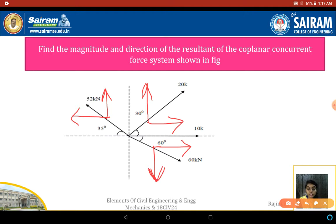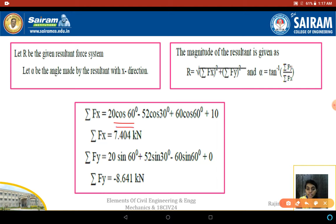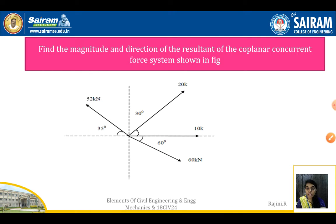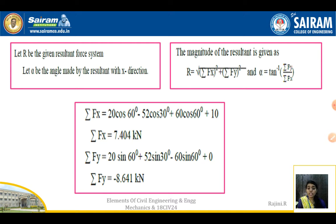For the angle: if the force is acting along the angle, we take cos theta for the horizontal component; if it is acting away from the angle, we take sin theta. So ΣFx = 20 cos 60° − 52 cos 30° + 60 cos 60° + 10. The 52 kN moves leftward (negative) and 60 kN and 10 kN move rightward (positive), giving ΣFx = 7.404 kN.